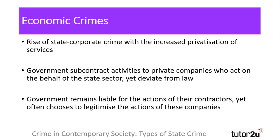Economic crimes were possibly the hardest form of crime to detect, given the role of privatised services performing state functions. With the growth of privatisation in the 1980s and onwards, the government subcontracted services to private companies acting on behalf of the state sector. However, as with other forms of corporate crime, these providers often deviate from the law in order to maximise profits. Whilst the crimes are committed by the private firms, the state remains liable for the actions of their subcontractors — for example, the subcontracting of building firms to place cladding on the towers at Grenfell by Chelsea and Kensington Council. While that inquest continues, the government has chosen to indemnify those that testify against prosecution, an example of the government acting to legitimise the actions of these companies.